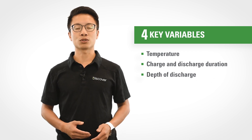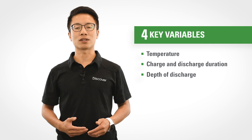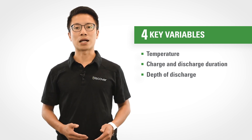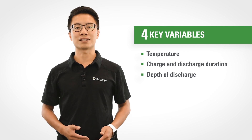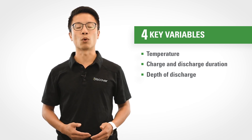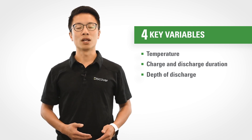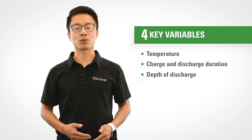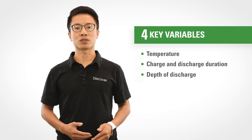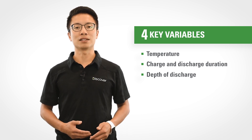Depth of discharge is also a more common item that affects cycle life characteristics. If you decide to do a shallower discharge and you consider that as a cycle versus deeper discharges, the shallower discharges would give you more cycles than if you were at deeper discharges. So if you compare 50% DoD versus 100% DoD, you would get much more cycles out of a battery that is only cycled at 50% DoD.